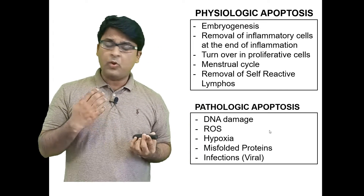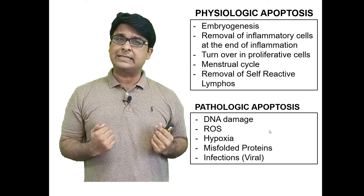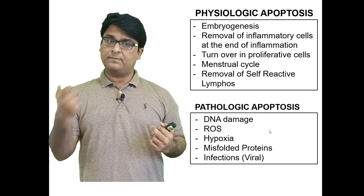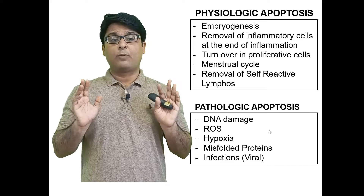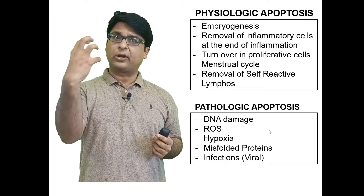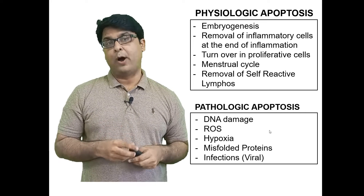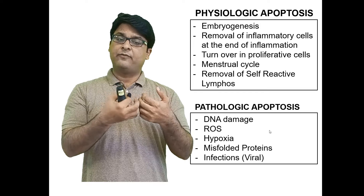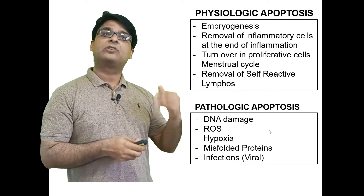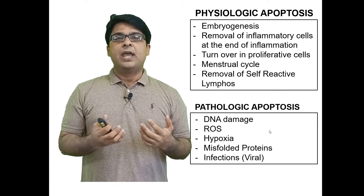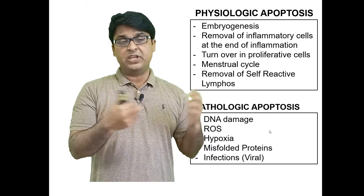Another physiological example is the removal of inflammatory cells at the end of inflammation. When there is inflammation, many immune cells are recruited to combat the insult. Once the stimulus is over and the body is safe, those immune cells are no longer needed and they undergo apoptosis. Because inflammation is over, in a programmed way those cells die.